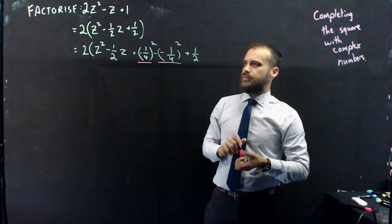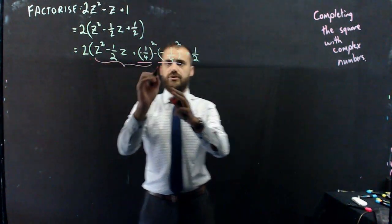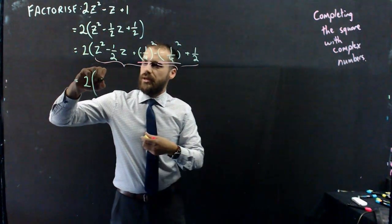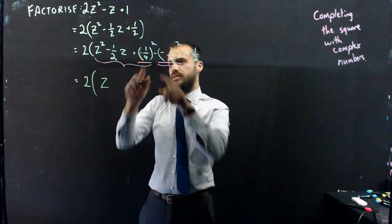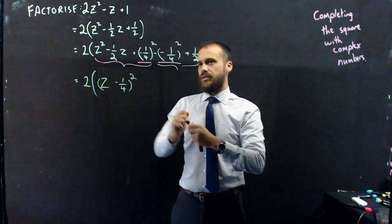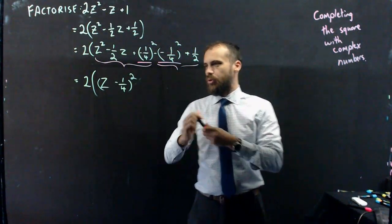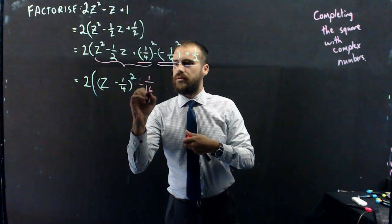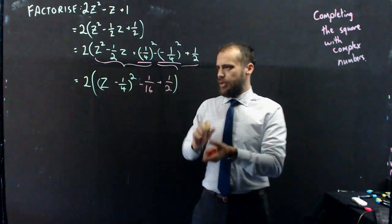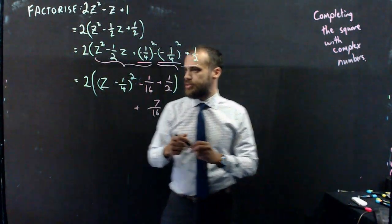That's the plus and minus bit that we're doing there. All right, so now we have this bit here is the perfect square and this bit here is the rest of it. So, we get 2 out the front, z minus 1 quarter squared and then it's going to be 1 half minus 1 16th. Or we can just say minus 1 16th plus 1 half. Whatever that is, that ends up being positive 7 16ths.